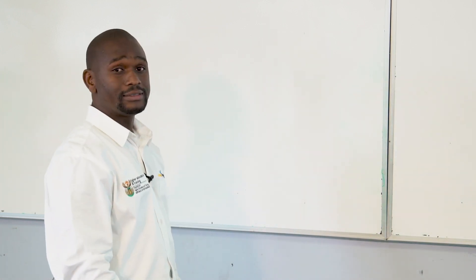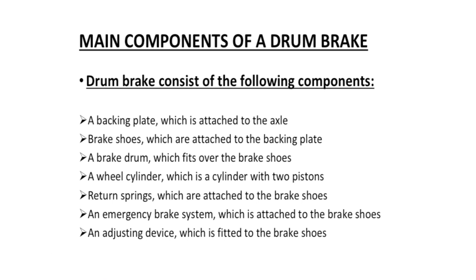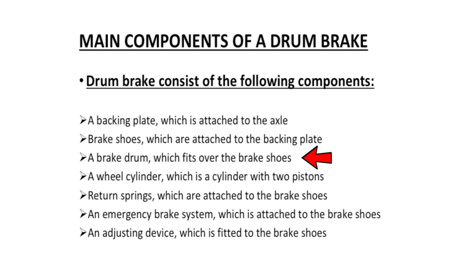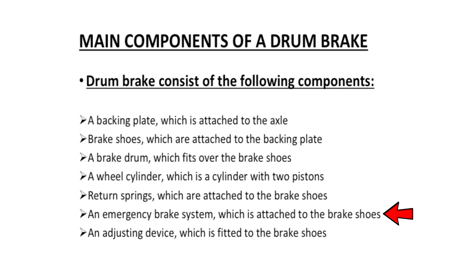Main components of a drum brake: it's a backing plate, which is attached to the axle. Then we have brake shoes that are attached to the backing plate. Then we have a brake drum, which fits over the brake shoes. We also have a wheel cylinder, which is a cylinder with two pistons. Then we have a return spring, which is attached to the brake shoe. An emergency brake system, which is attached to the brake shoe, and an adjusting device also attached to the brake shoe.